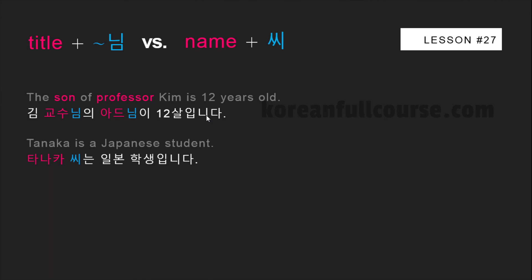Tanaka is a Japanese student: Tanaka 씨는 일본 학생입니다. Tanaka is a Japanese last name — Japanese people avoid using first names. Also, when you use 씨, there must be a space between a person's name and the particle 씨, whereas when you use 님, you need to attach it directly to a noun.